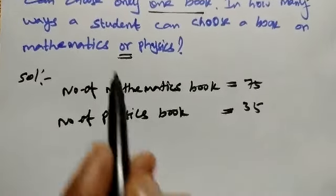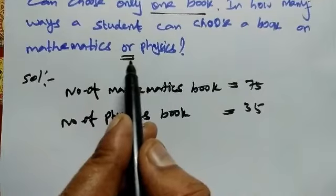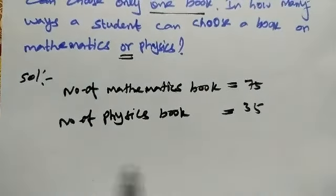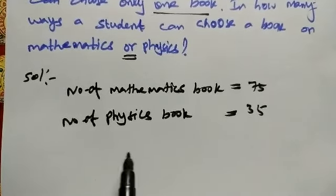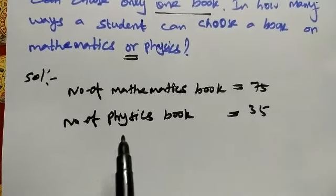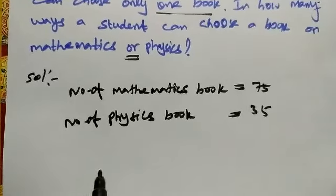So this is addition - that is sum rule applied. This is sum rule. So this is m plus n formula.